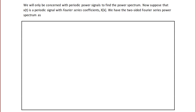In this course, we will only be concerned with periodic power signals to find the power spectrum. Suppose that x(t) is a periodic signal with Fourier series coefficients x[k]. We have the two-sided Fourier series power spectrum as shown here.